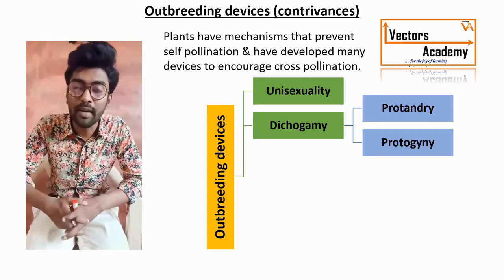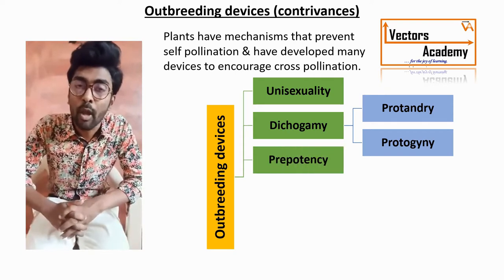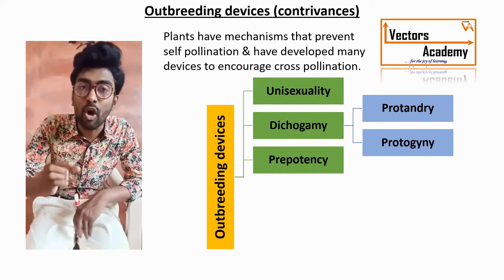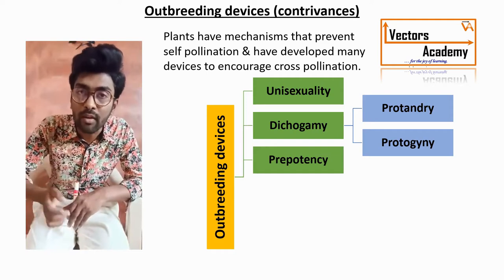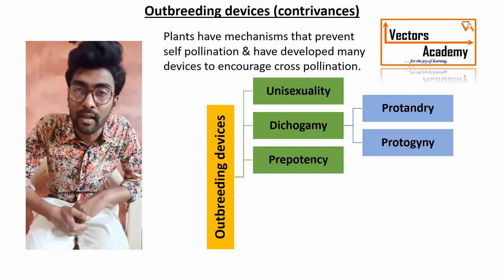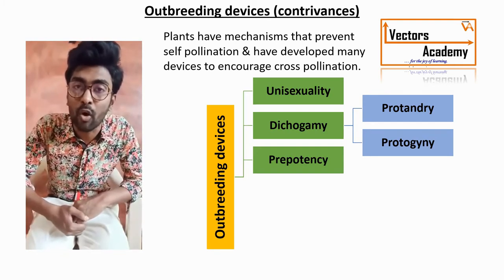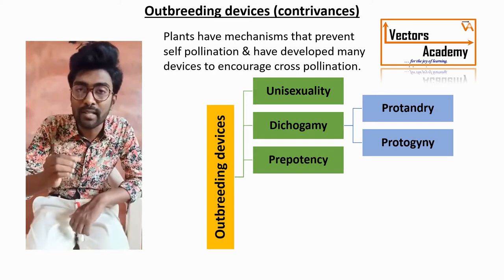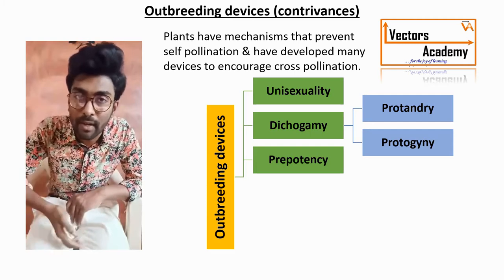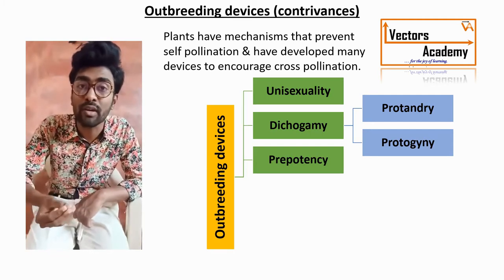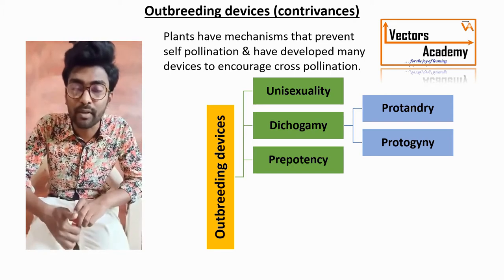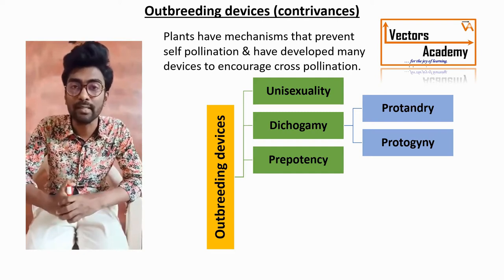The best example for protogyny is Gloriosa or the four o'clock plant, also called Mirabilis jalapa. The third outbreeding device is prepotency. 'Pre' means earlier. In prepotency, the germination of the pollen grain from another flower takes place on the stigma much more quickly or rapidly than the pollen grain present on the same flower. The best example for prepotency is apple.